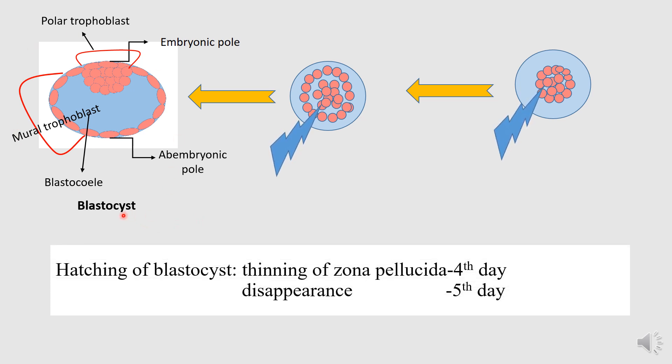Now, approximately around 4th and 5th day of fertilization, what happens? By 4th day, there will be thinning of the zona pellucida, the outer layer, thinning of the zona pellucida. And by the 5th day, it will get disappeared.